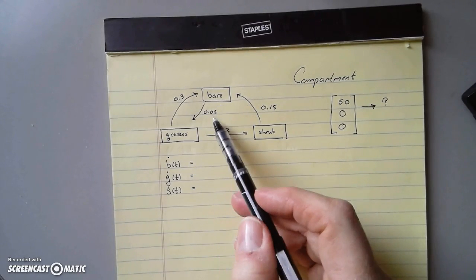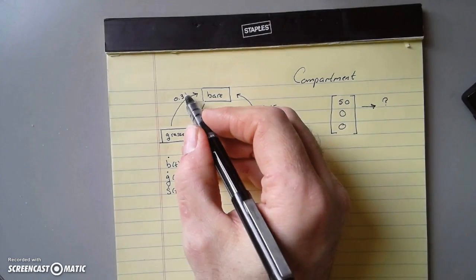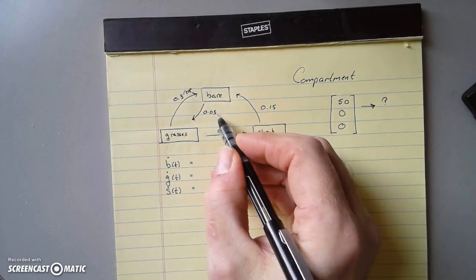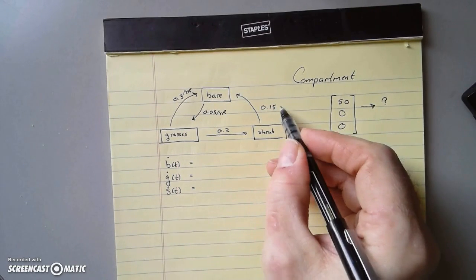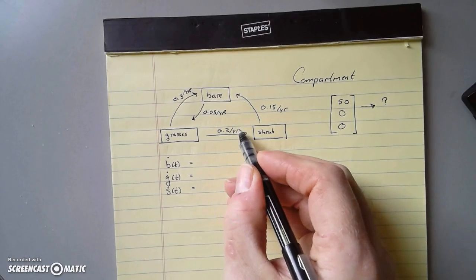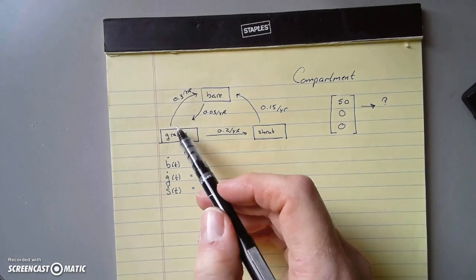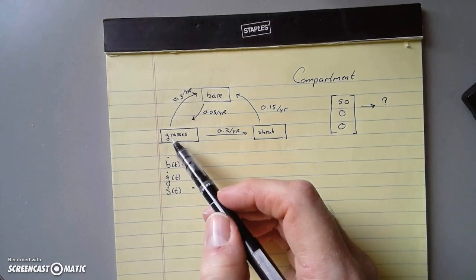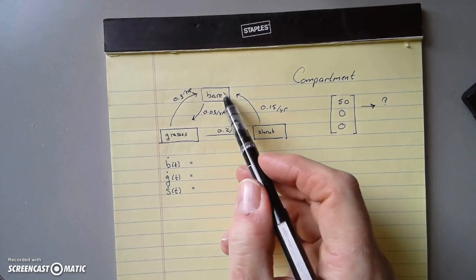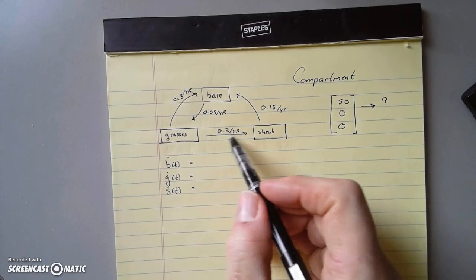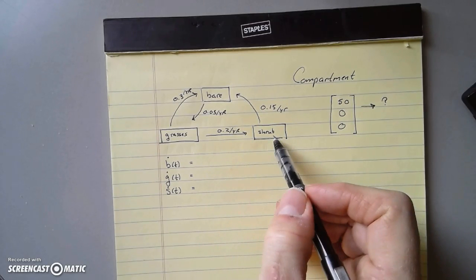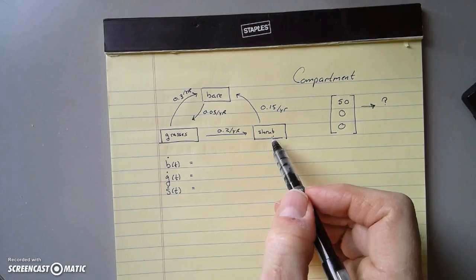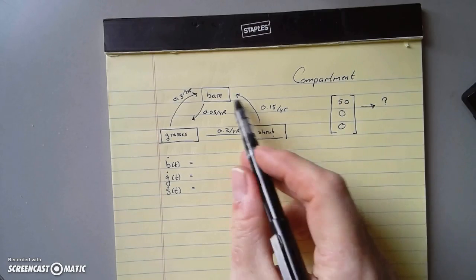Bare ground gives way to grass - grass colonizes 5% per year. These are all per year. 30% of any existing grassy ground dies off, 20% of any grassy ground is colonized by shrubs, and those shrubs lose 15% of their holdings every year.